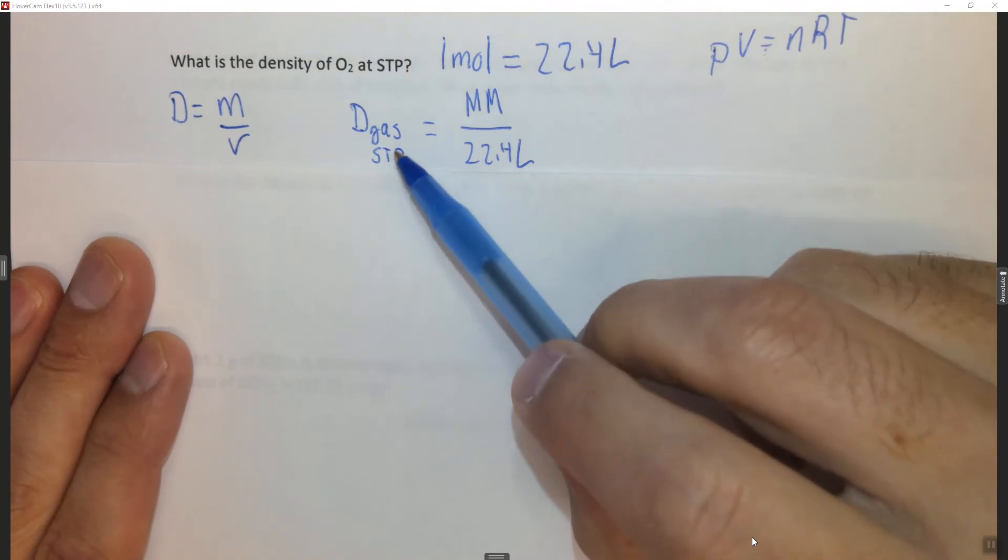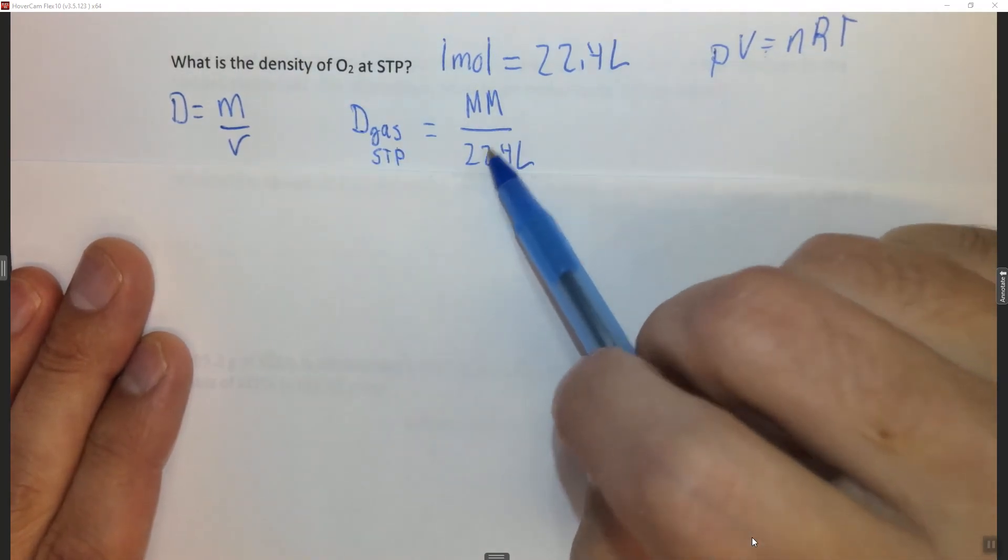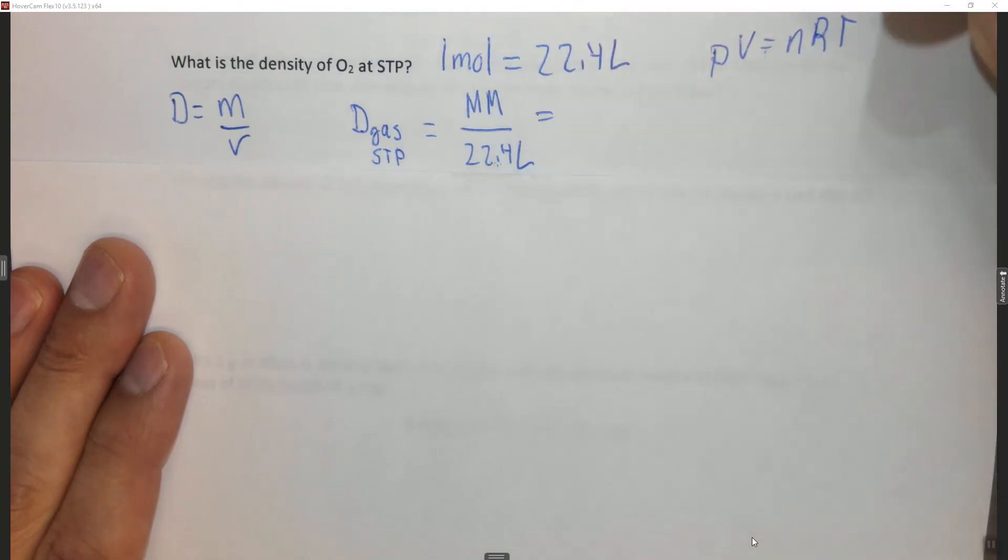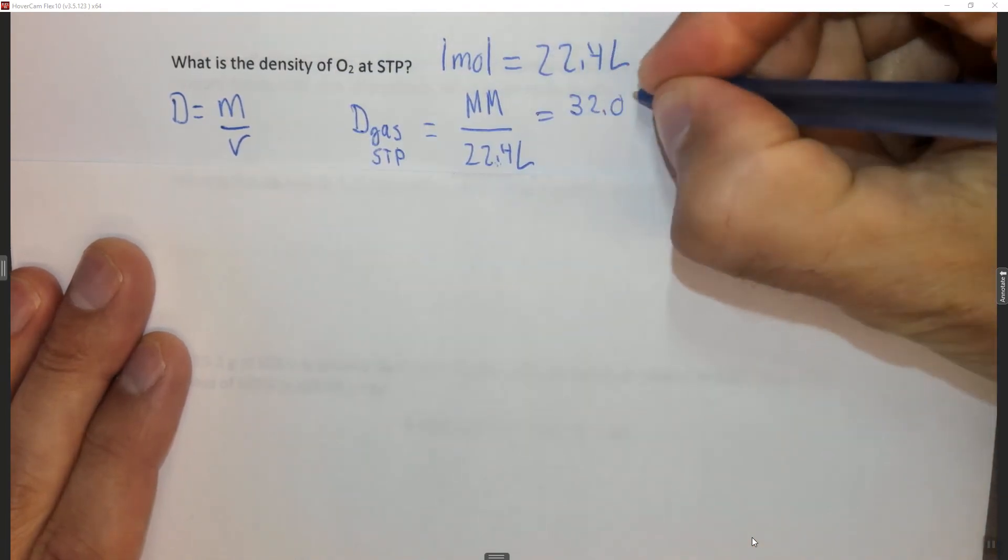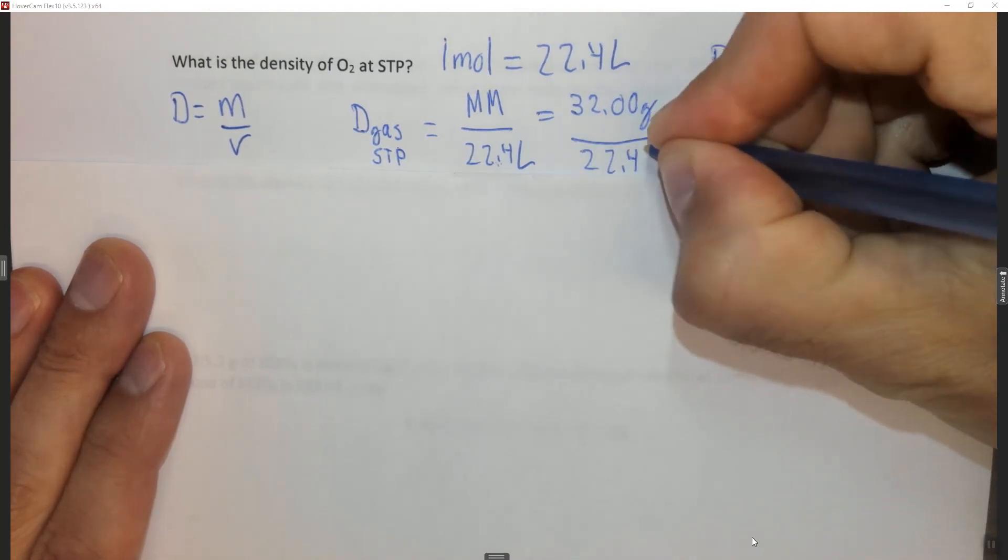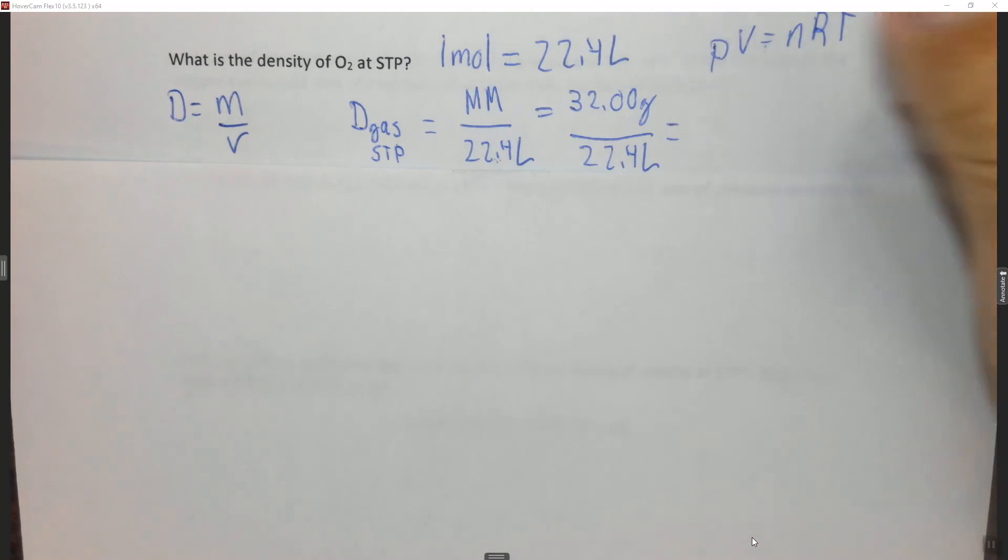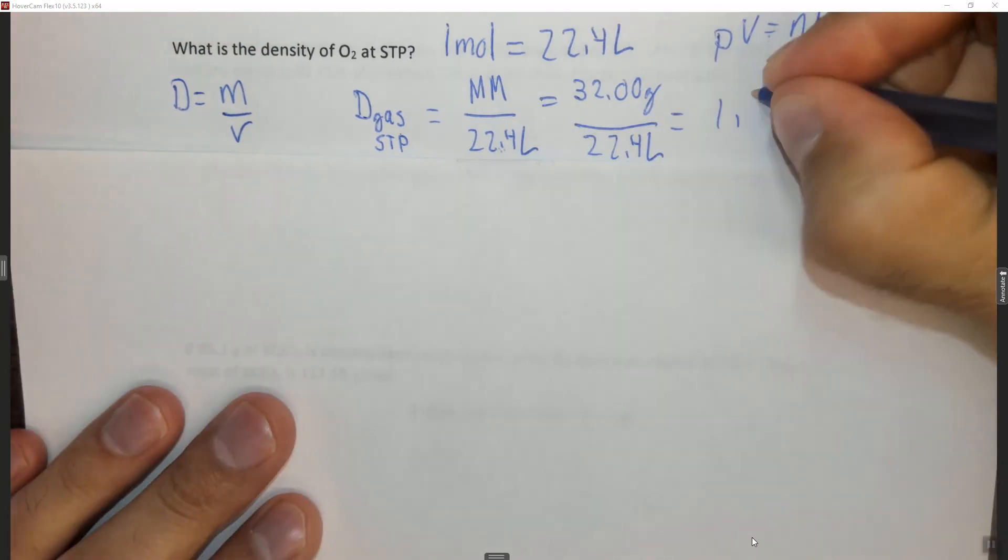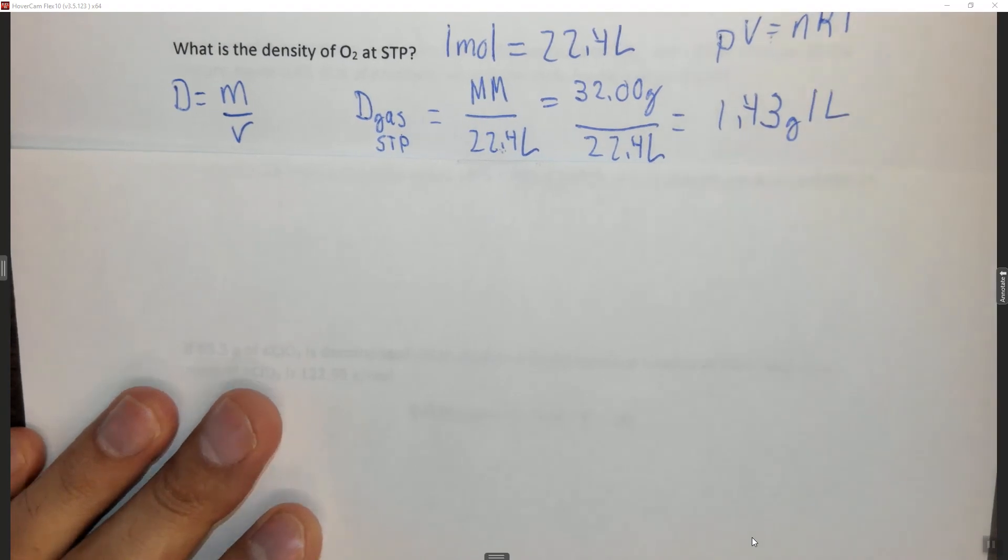But remember that this only works at STP, otherwise you would actually have to find the volume. In this case, the molar mass of O2 is 32.00 grams, and the volume is 22.4 liters. When you do the math, you find that the density of this gas is 1.43 grams per liter at STP.